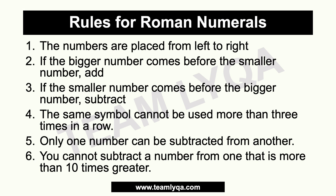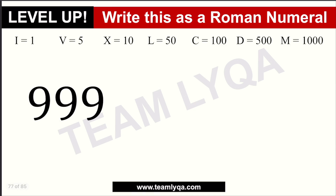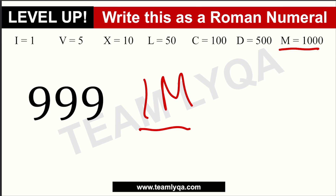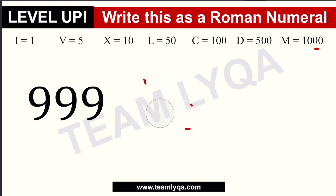Another important rule: you cannot subtract a number from one that is more than 10 times greater. So for a large number like 999, you might think to write it as IM — since M is 1,000 and 1,000 minus 1 equals 999. However, because of the rule that you cannot subtract a number that is more than 10 times smaller, IM is not correct. Converting 999 to Roman numerals is actually a longer process.